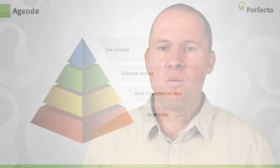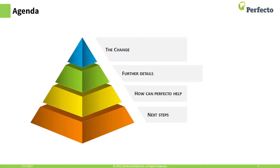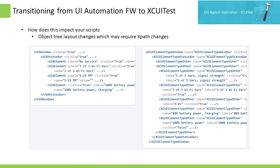Let me walk you through the details of the changes needed, how Perfecto can help you through this change, and next steps. Diving into the details, the significant change you're going to see is to your script. Let's start from native object identifiers.